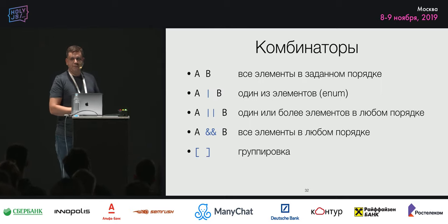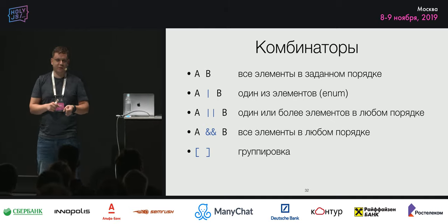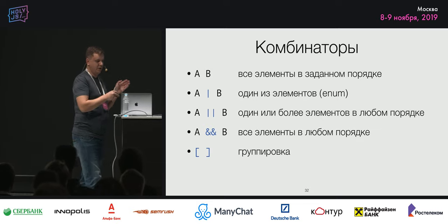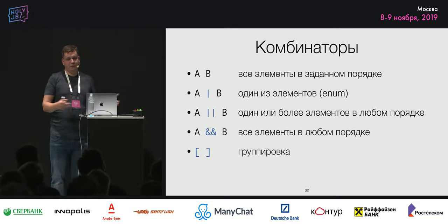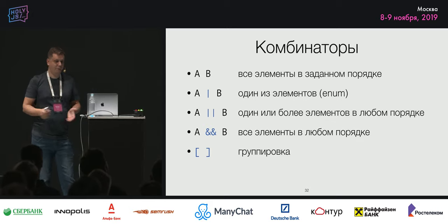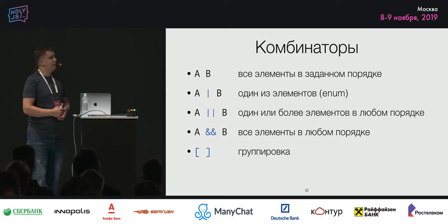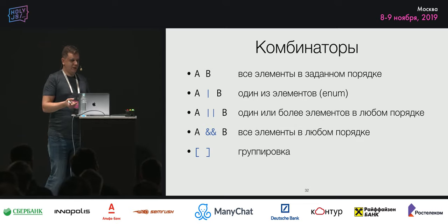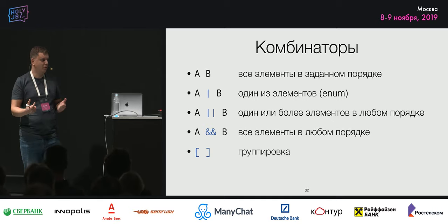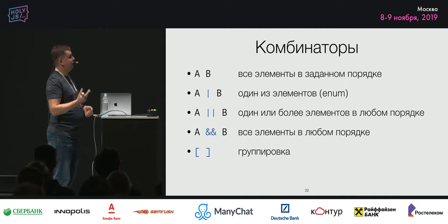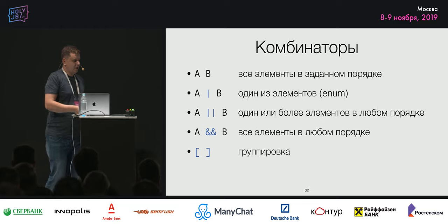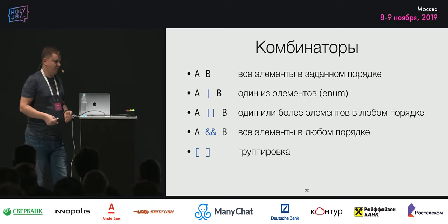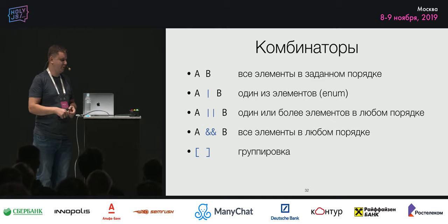Тип определяется в треугольных скобочках: имя равно какому-то определению. И потом этот тип можно использовать в других определениях или свойствах. Всего бывает три типа ссылок. Также есть комбинаторы, когда элементы между собой каким-то образом комбинируем. Если два подряд элемента — они должны обязательно присутствовать и идти в таком порядке. Одна вертикальная черта — это «или»: либо a, либо b, типа enum. Есть ещё хитрые комбинаторы, которые не встречаются больше нигде: две вертикальные черты и два амперсанда. С амперсандом — нужно взять и a, и b, но они могут идти в любом порядке. Две вертикальные черты — можно взять либо один, либо два, либо сколько там перечислено, они также могут идти в любом порядке, но не обязательно все должны присутствовать. Есть ещё группировка.